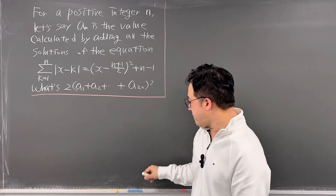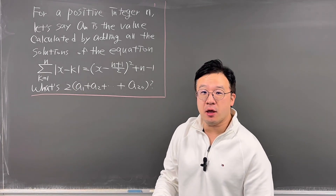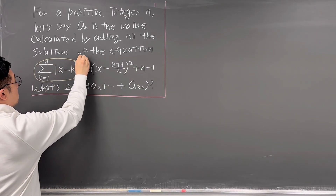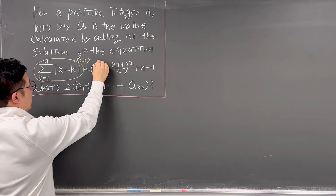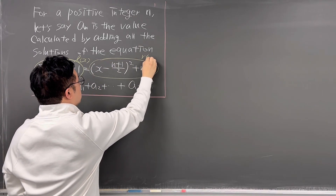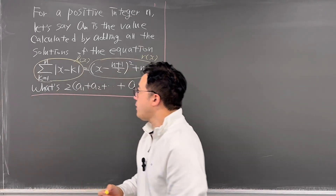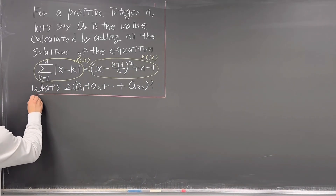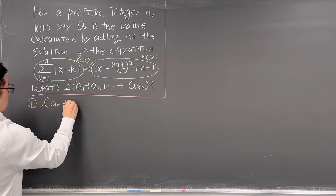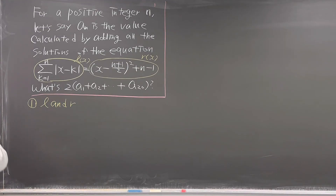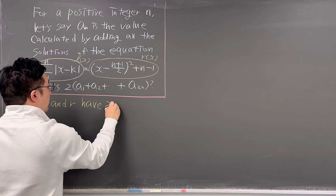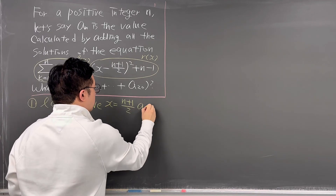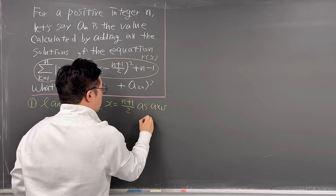So looking at this, for convenience, let me call the left-hand side L(x) and the right-hand side R(x). Then we can observe four things. First, L and R both have x = (n+1)/2 as their axis of symmetry.